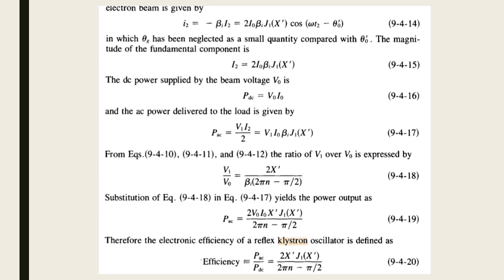Just like the two-cavity klystron, current modulation also takes place in the reflex klystron. In current modulation, you get a DC value, and as a result, a lot of power is dissipated in the form of heat. Hence, a cooling fan is also required for reflex klystron. You will see that in our lab. In our lab, reflex klystron is used as a microwave source — the first block you always see will be a reflex klystron.